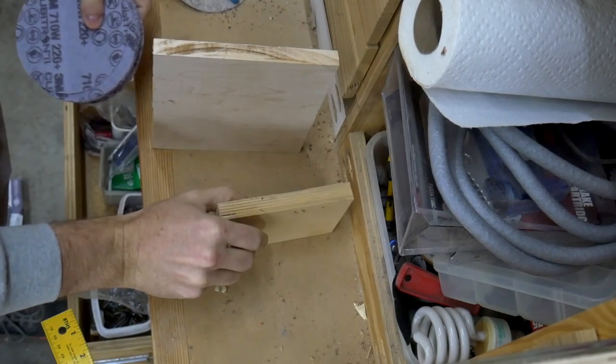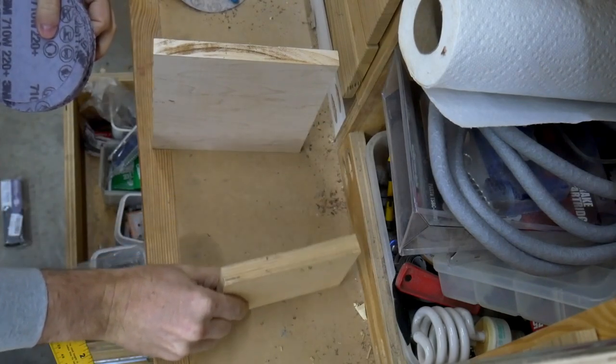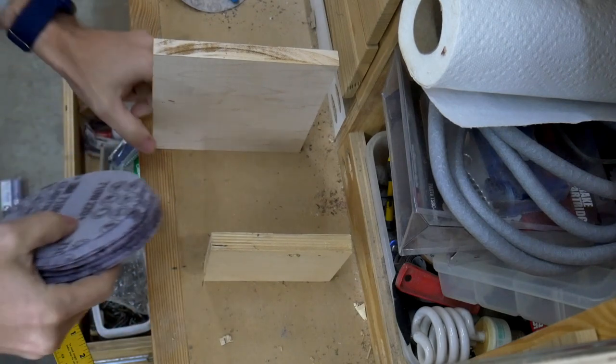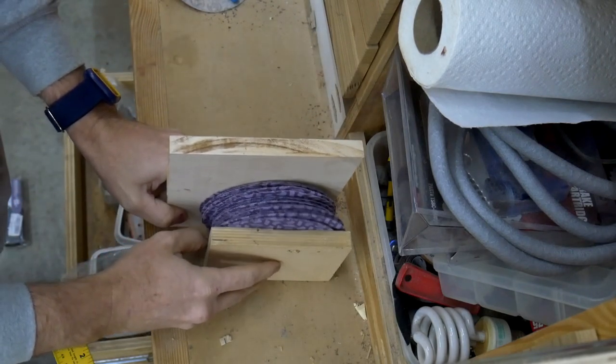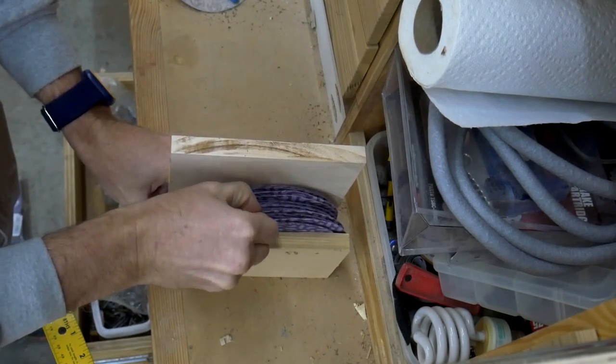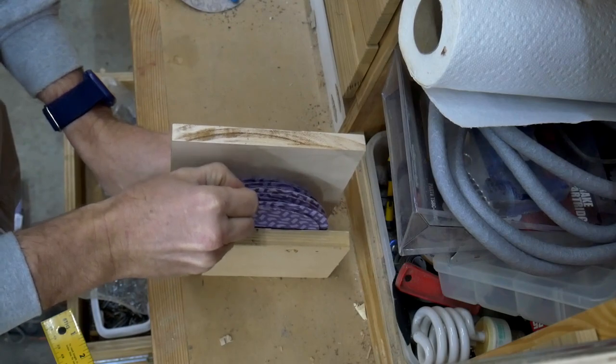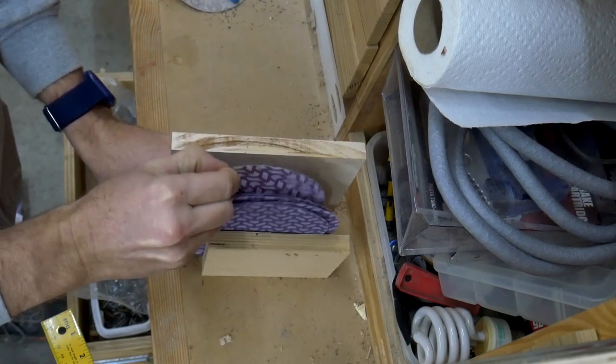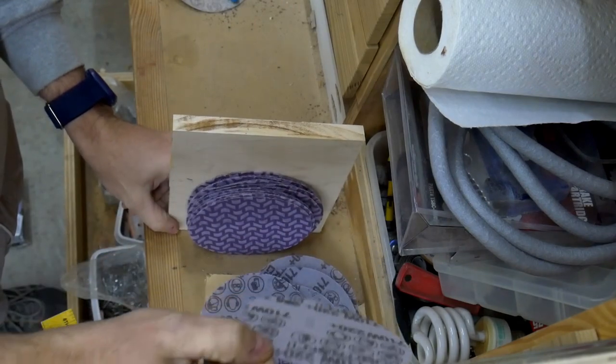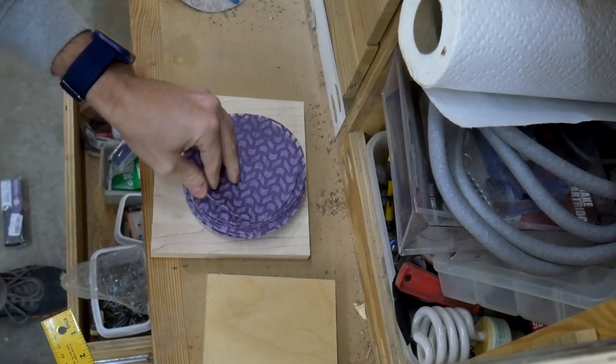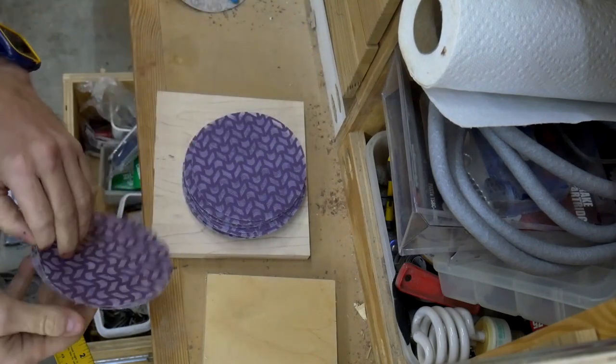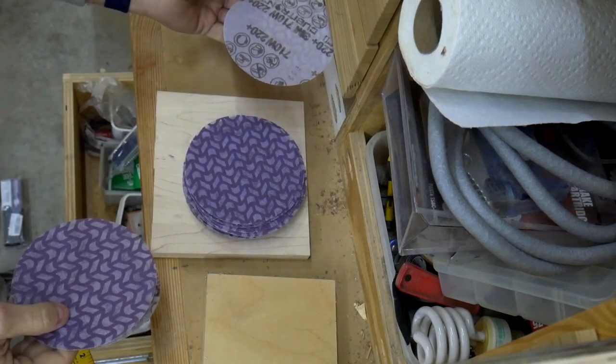One thing I noticed is that since this is hook and loop sandpaper, when stacked, the grit from one sheet tends to grip on the hook and loop surface on the back of another sheet. So I felt like if I stored them vertically I'd be constantly fighting that friction, so I decided to design these to lay flat horizontally. I can grab the top sheet off the stack and not worry so much about the sheets sticking together.